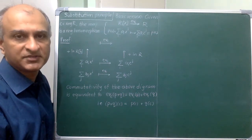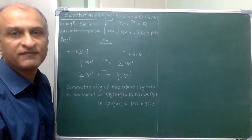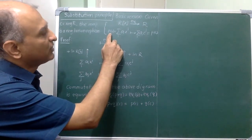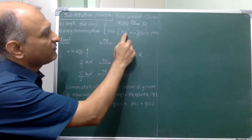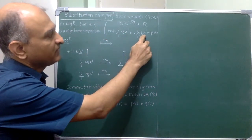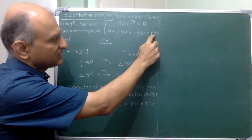In the basic version of the substitution principle, we are given a commutative ring R and a fixed element C in that. Using this, I define a map called evaluation at C. I start with a polynomial P of x and for the variable x, I substitute the given value C in order to get an element of the ground ring that I denote by P of C.